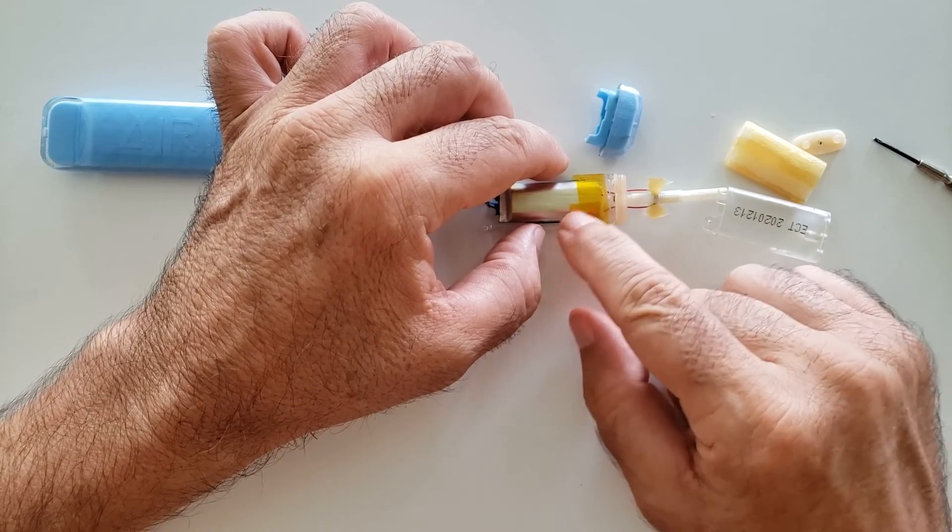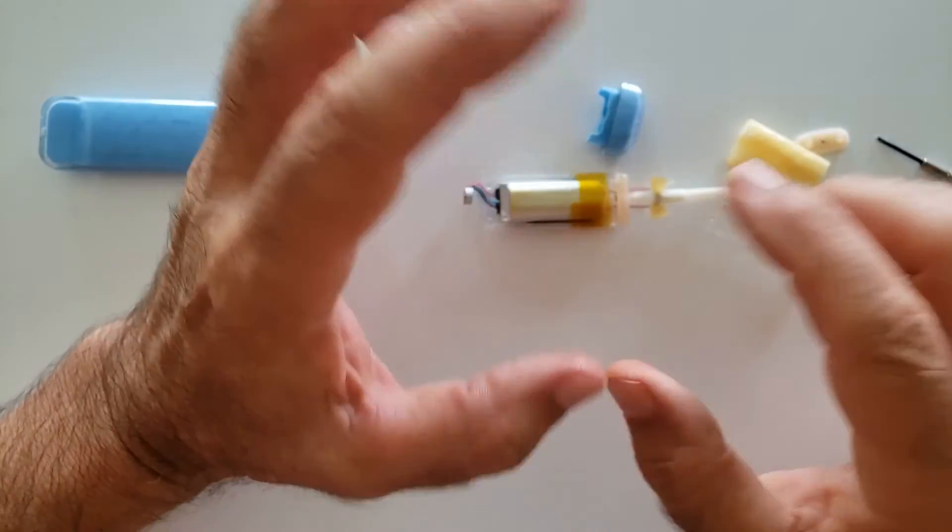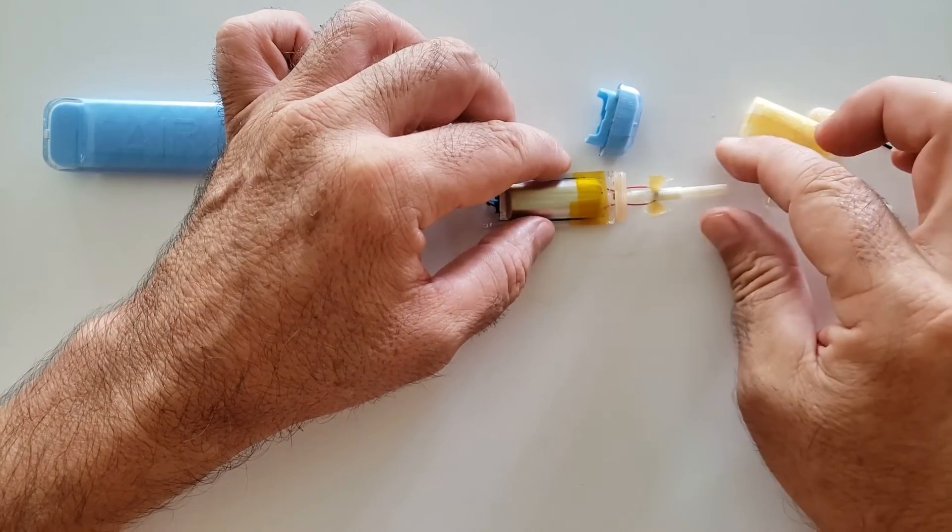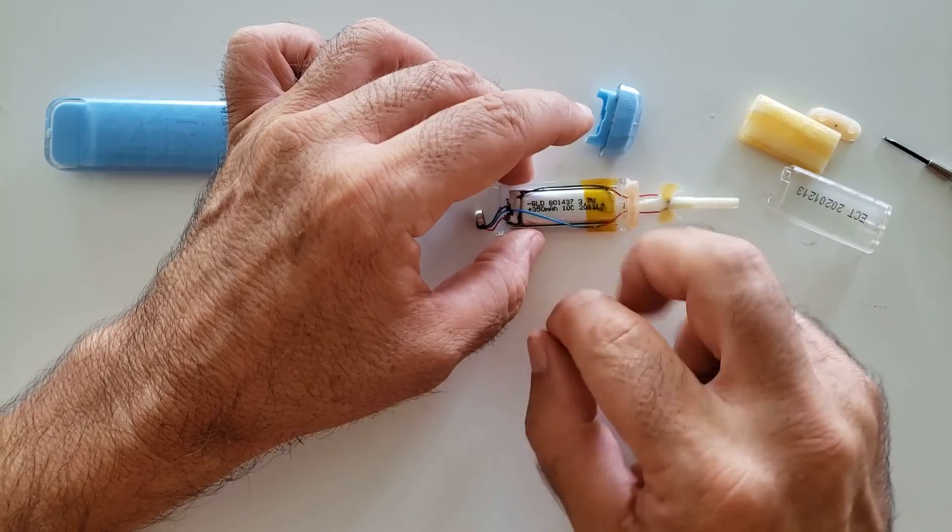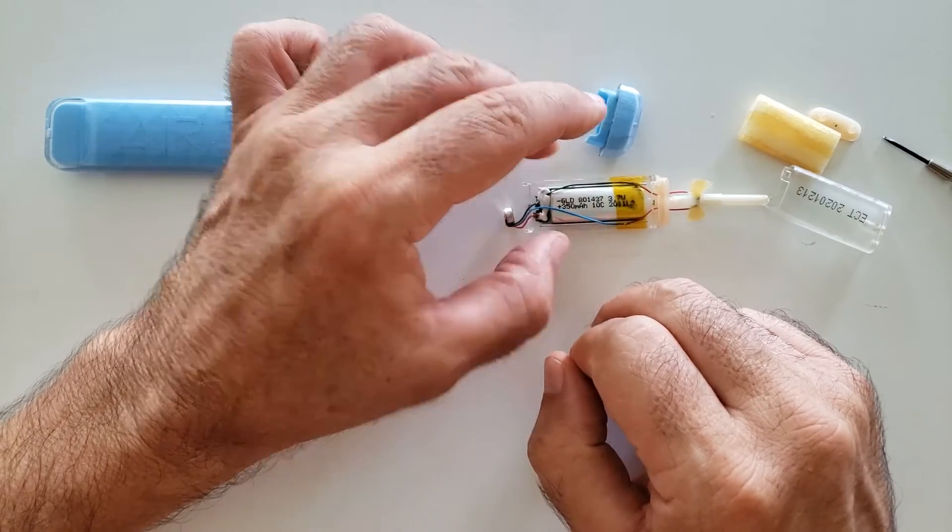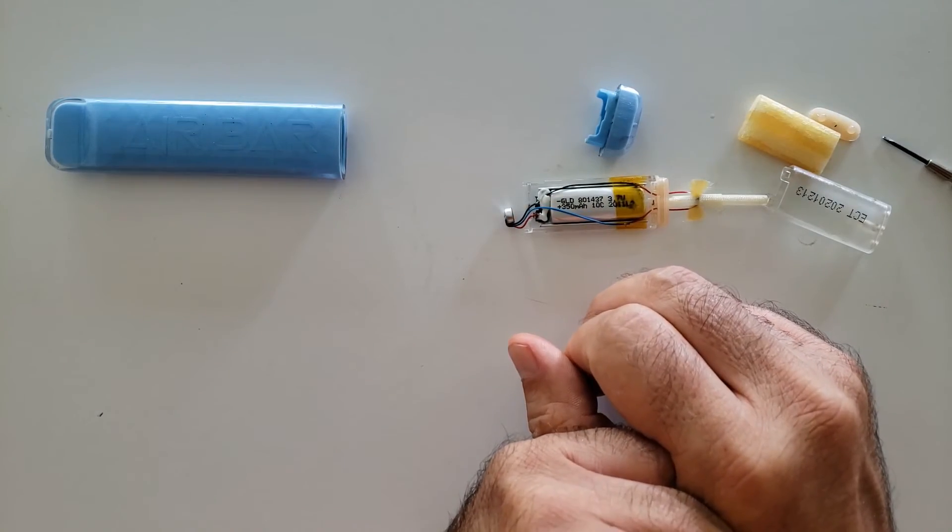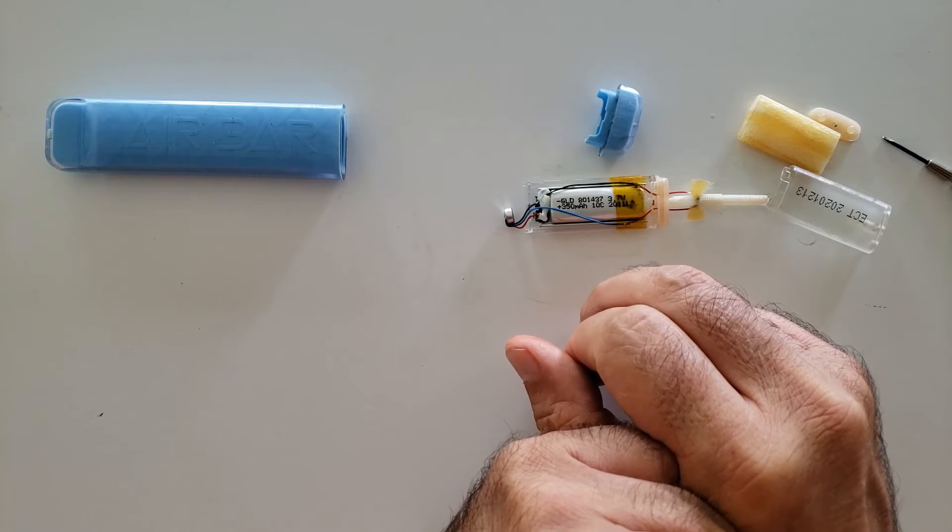If you've seen people use vaping devices, they just exhale a giant cloud. Anyway, this is how easy it was to take one of these things apart. These are kind of handy cells to have. There are a lot of radio control models that use them, from little quadcopters to little helicopters.